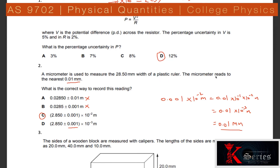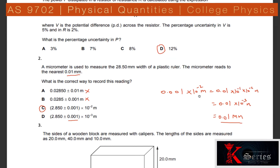Question 2: A micrometer is used to measure a width of 28.50 mm. The micrometer reads to the nearest 0.01 mm, so the precision is 0.01 mm. Converting: 0.01 mm = 0.01 × 10⁻³ m. The correct way to record this reading is 28.50 mm — the answer is C, because the width is 28.50 millimetres.